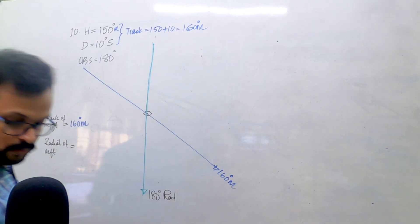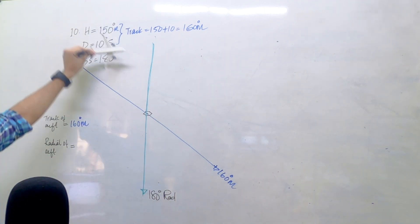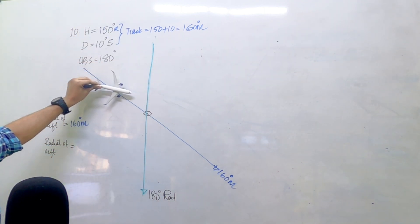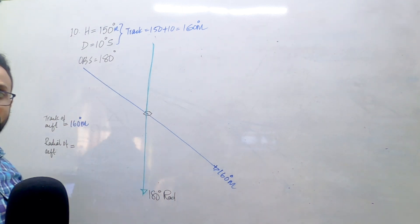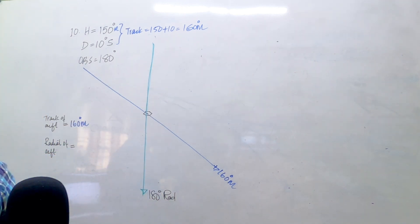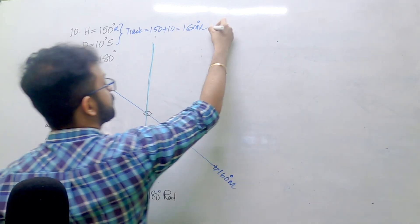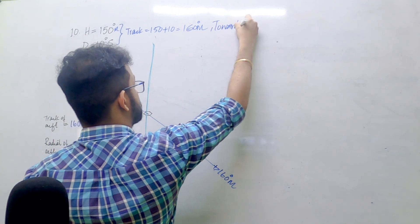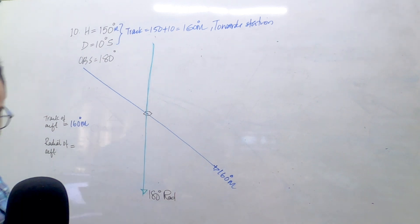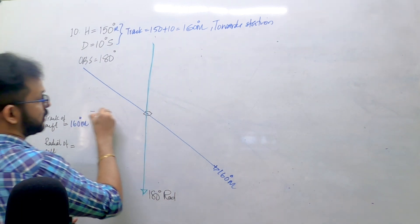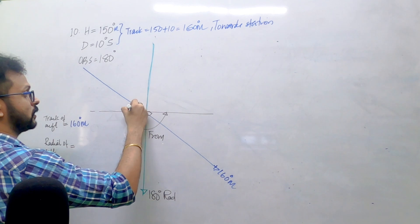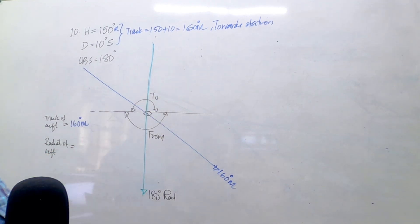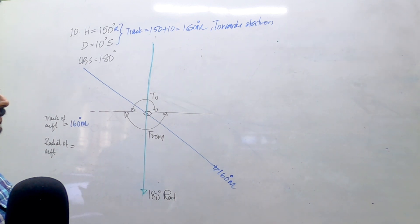The heading of the aircraft is 150. So the aircraft is on a heading of 150. Since we have a desired radial, we can divide this desired radial with a perpendicular radial, which forms the front side or head side and the two side for the desired radial. The aircraft will be diagonally opposite.